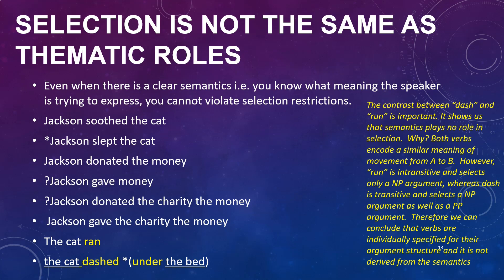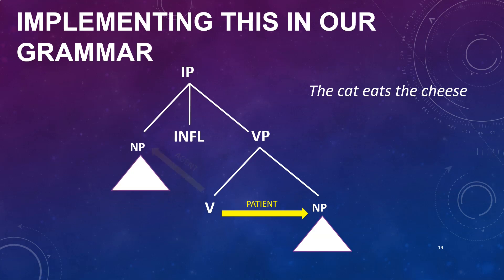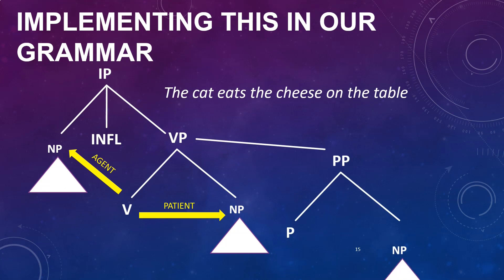All these examples tell us that meaning alone is not enough to make something grammatical. Put another way, since we've encoded meaning as theta roles, merely having a theta role to assign is not enough to make a sentence grammatical — the verb or preposition must also have its appropriate noun phrase or other category for the theta role to be assigned. Let's implement this in our grammar. A sentence breaks into a noun phrase and a verb phrase; the verb phrase breaks into a verb and a noun phrase. We merge the object noun phrase — in 'the cat eats the cheese' this would be 'the cheese' — and the verb assigns a patient theta role to it, shown with a little arrow. We then merge the subject noun phrase and the verb assigns an agent theta role to it.